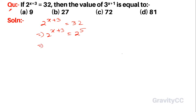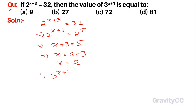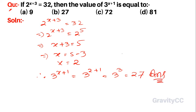Since the bases are the same, x plus 3 is equal to 5, so x is equal to 5 minus 3, therefore x equals 2. So 3 to the power x plus 1 is equal to 3 to the power 2 plus 1, which is 3 to the power 3, equal to 27. Option B is the correct answer.